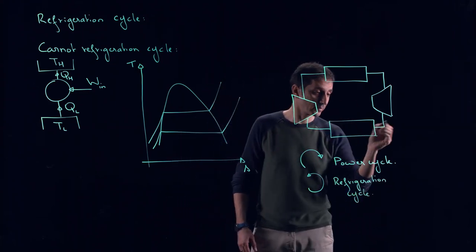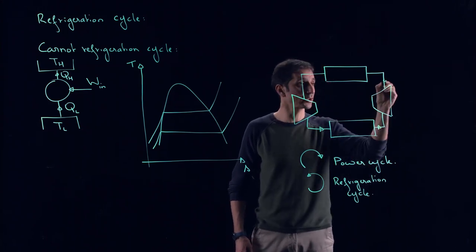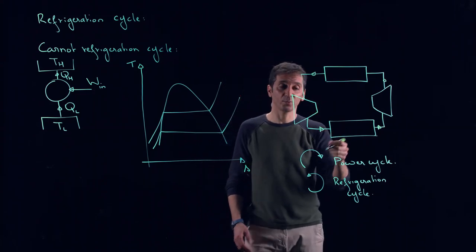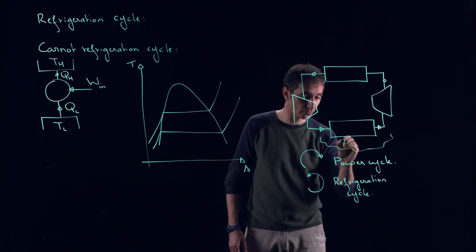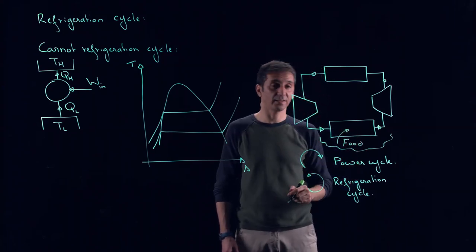For us, we would like to run it anti-clockwise, so we'll be going in this direction. Here, what do we have? Your food or the thing that you would like to cool down is sitting here, and you would like to extract heat, so this is your QL here.